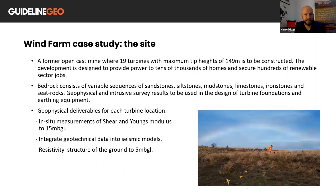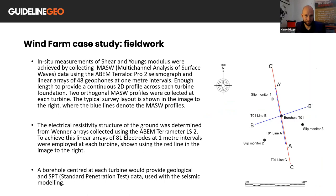The site itself comprised a former open cast mine where 19 turbines were to be built with tip heights of up to 149 meters. The geological landscape consists of variable sequences of sandstones, siltstones, mudstones, limestones, ironstones and seat rocks. The geophysical deliverables for each turbine location were in-situ measurements of the dynamic shear velocity, shear and Young's modulus, and to integrate geotechnical data in the form of standard penetration tests and borehole lithology into the geophysical models. And then finally to image the resistivity structure of the ground to 5 meters below ground level.